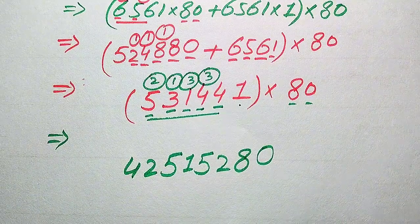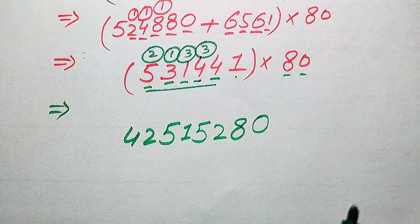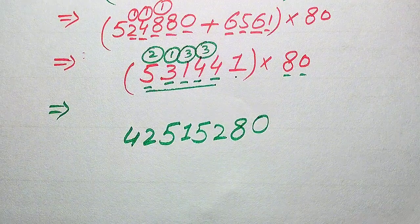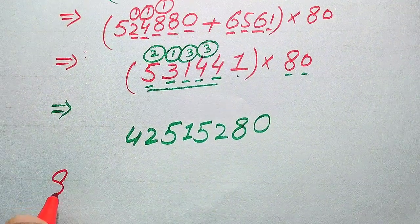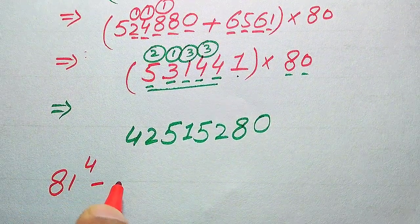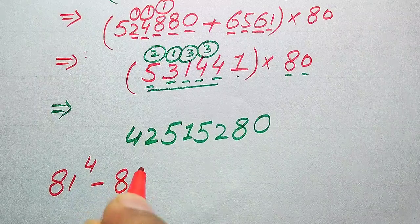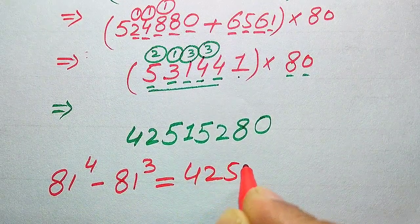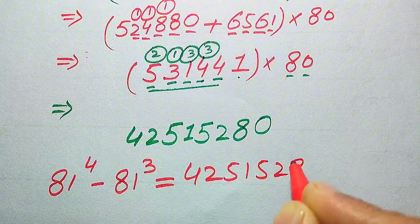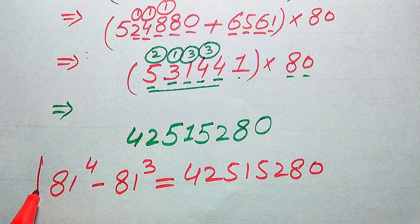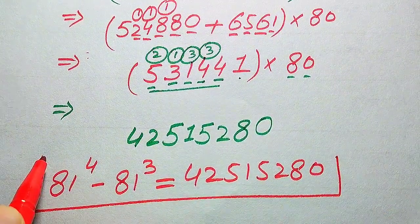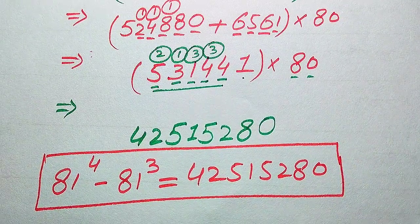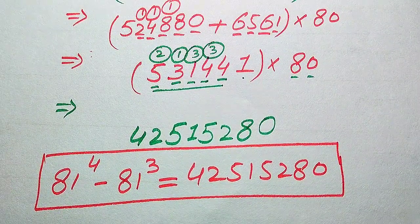Finally, we have the simplified form of the given expression: 81 to the power of 4 minus 81 to the power of 3 equals 425,152,800. This is our final answer.